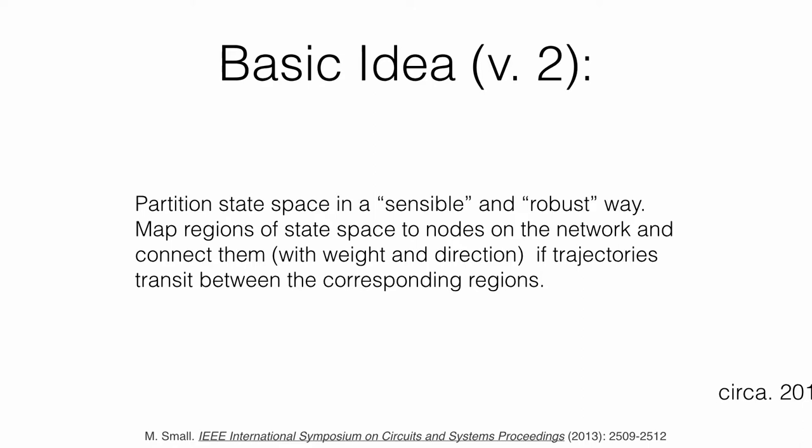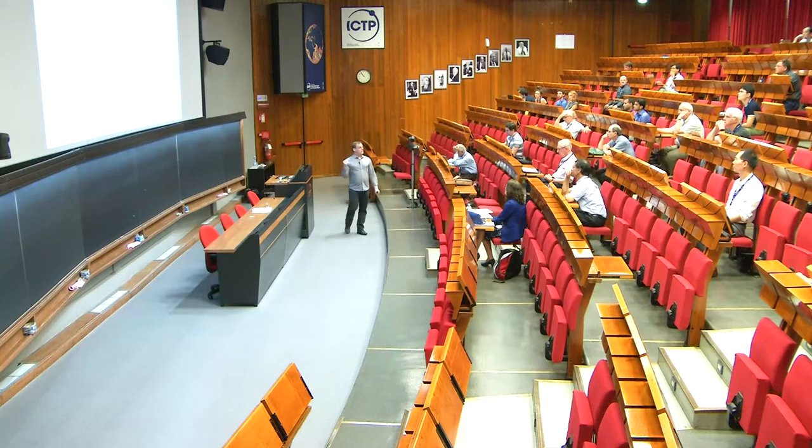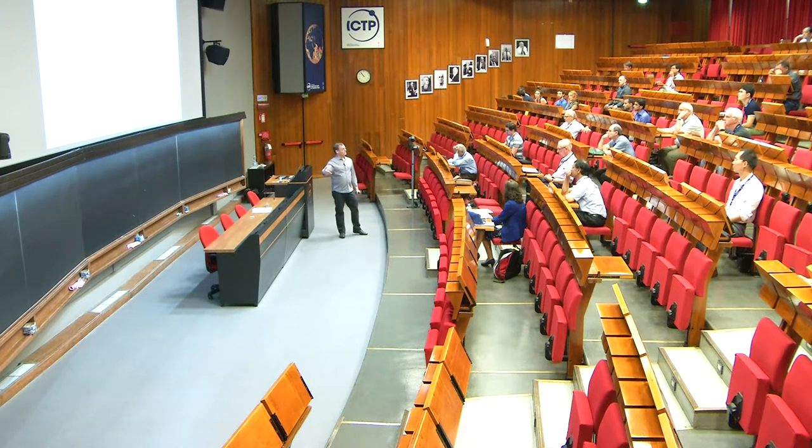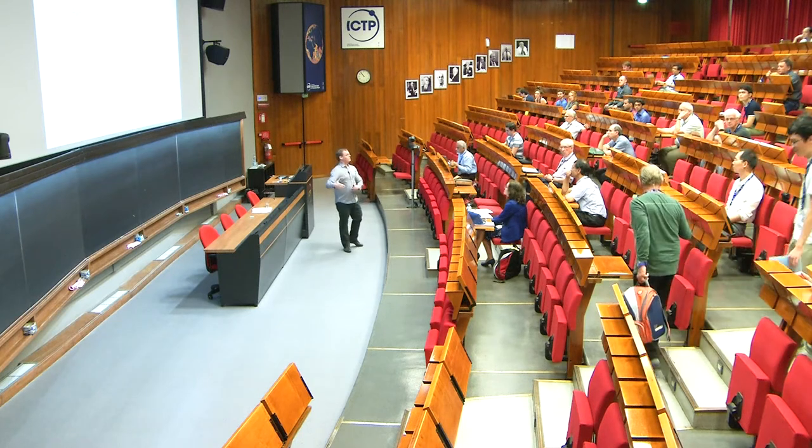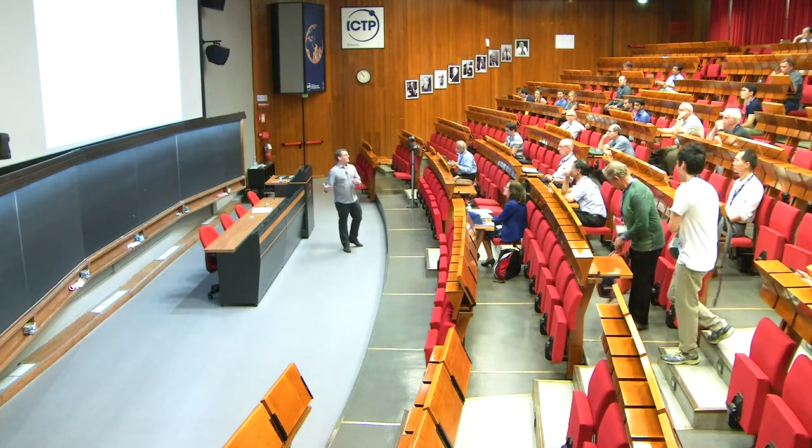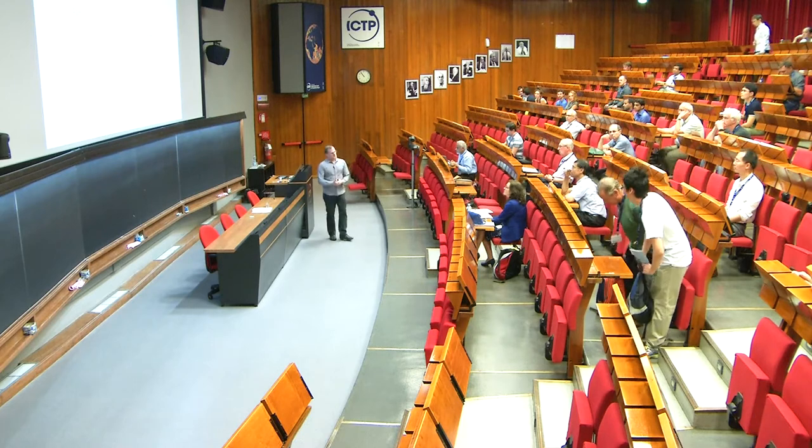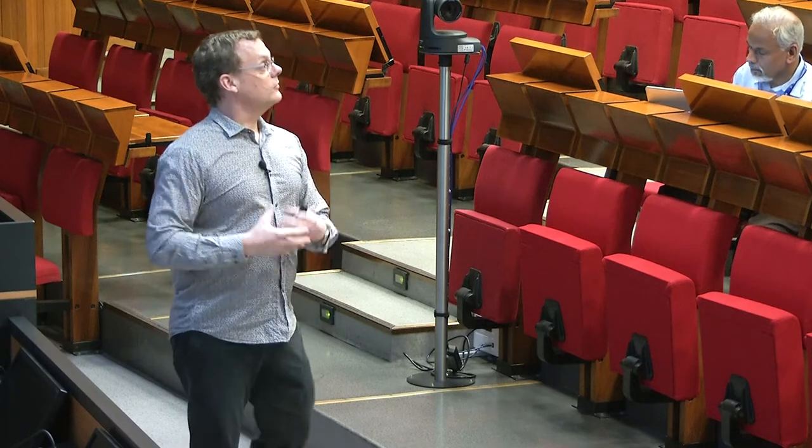The basic idea here is that everything I've shown you so far, I'm connecting things if they're close in space. There are some real problems with that. In some sense, it would be nice to have connections that reflect the dynamics, connecting things if I'm evolving from one state to the next. The other problem is that it scales with the length of time series. If each point in embedding is a new point, the longer the time series, the larger the network.